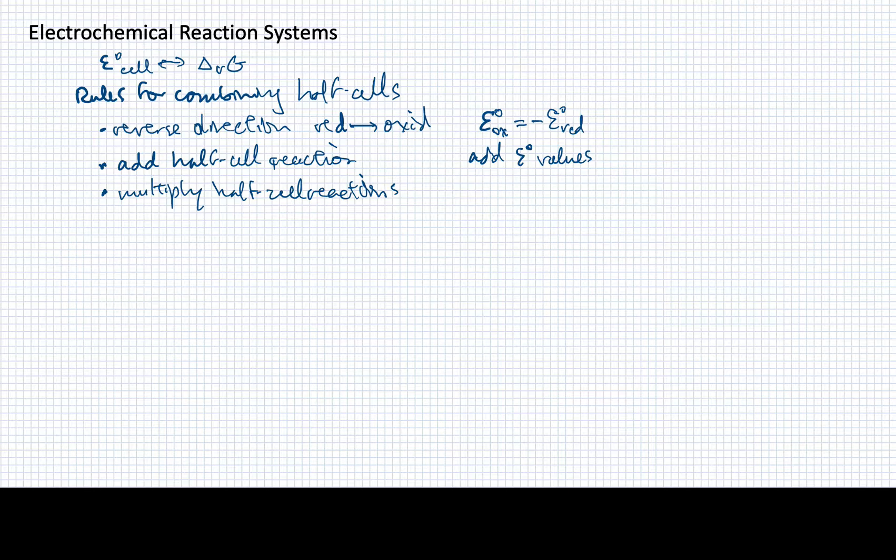So that's why we would be multiplying half cell reactions. But what effect does that have on the standard reduction potential that's tabulated? Well, this answer may surprise you, but it stays the same. It does not get multiplied by whatever you've had to multiply those half reactions by. So you might ask, well, why is that?